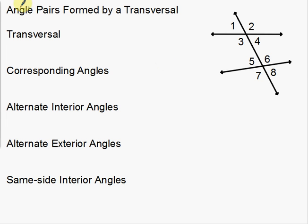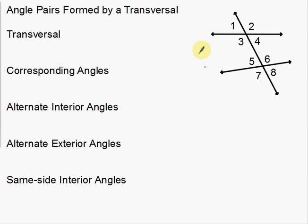In this video I'm going to talk about angle pairs formed by a transversal. Basically, these are a list of vocabulary words that I'm going to go over. These angles and pairs are created when you have a transversal that intersects two or more lines. We have a transversal that intersects two lines and it forms eight different angles. We're going to look at the relationship of all eight of those angles.